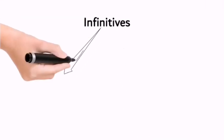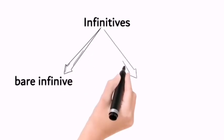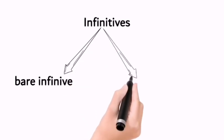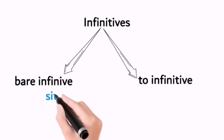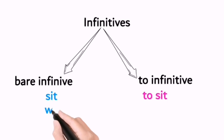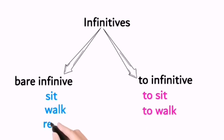We are going to talk about two types of infinitives: bare infinitive and to infinitive. Bare infinitive means the base form of the verb, like 'sit'. To infinitive means 'to' plus verb form, example 'to sit'. More examples are 'walk' to 'to walk', 'read' to 'to read'.